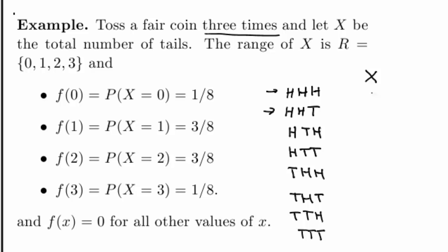So for the first case — three heads — I have zero tails. Then I have one tail, one tail, two, one, two, two, and three.